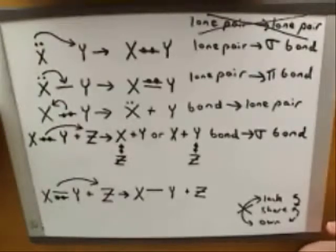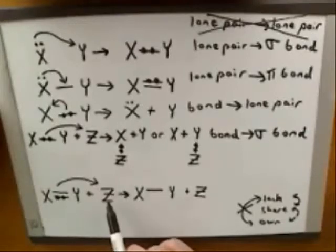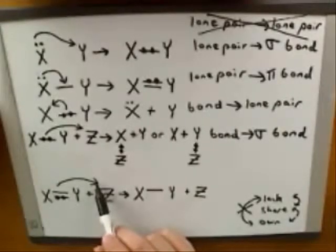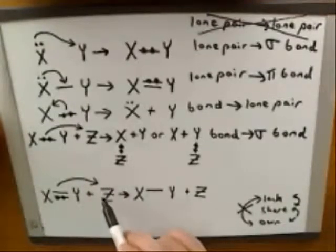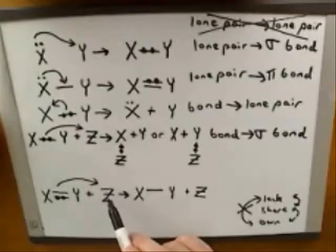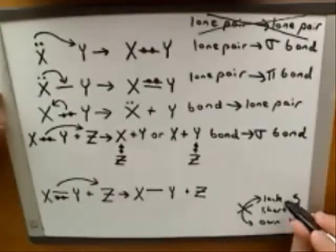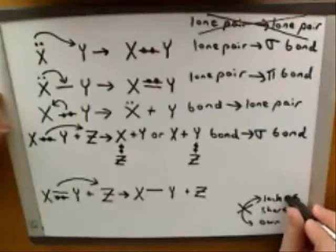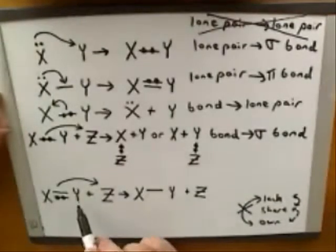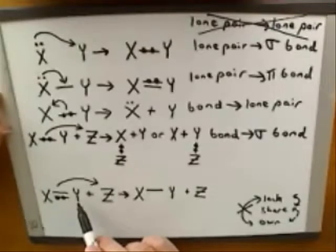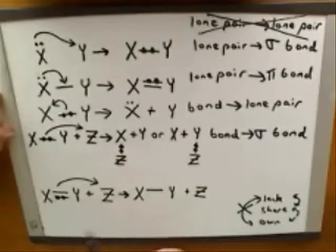Now, where is that pair of electrons going to go? We know that the electrons are moving towards Z because Z has the head of the arrow pointing to it. But is Z going to end up sharing the electrons in a bond, or owning them in a lone pair? The way to tell is to ask how did Z start. Z started by completely lacking the electrons, so since it's gaining more possession of them, it should end up sharing them in a bond. A bond with who? It can really be a bond with either X or with Y.